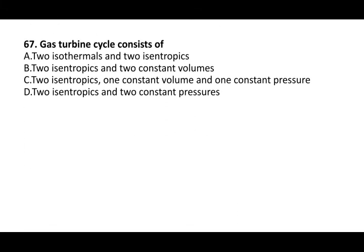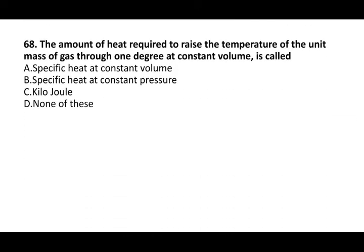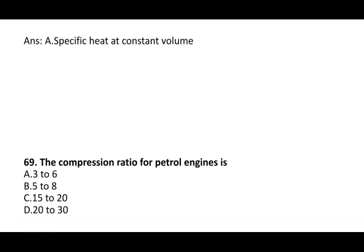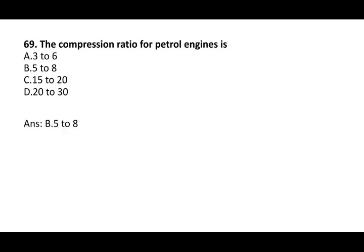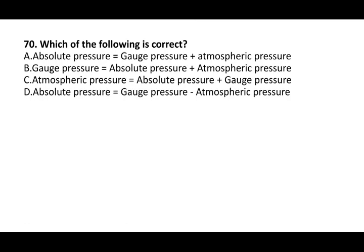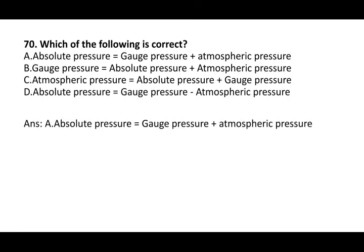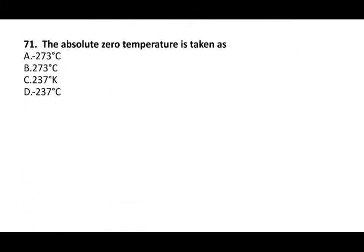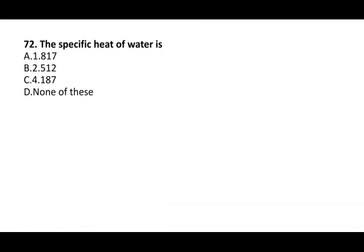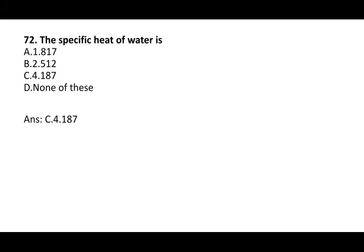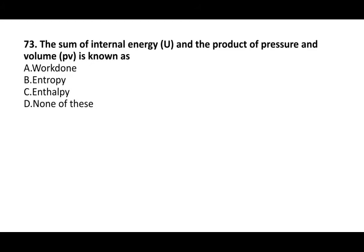Next question: the gas turbine cycle consists of two isentropic and two constant pressure processes. Next question: the amount of heat required to raise the temperature of unit mass of gas through one degree at constant volume is called specific heat at constant volume. Next question: the compression ratio of a petrol engine is 5 to 8. The absolute pressure is equal to gauge pressure plus atmospheric pressure. The absolute zero temperature is taken as minus 273 degrees Celsius. The specific heat of water is 4.187. The sum of internal energy and the product of pressure and volume is known as enthalpy.